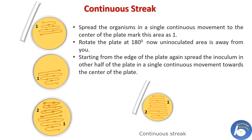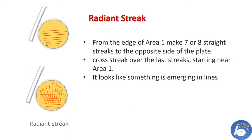Radiant streak plate method: From the edge of area one, make seven or eight straight streaks to the opposite side of the plate. Cross-streak over the last streaks starting near area one. It looks like lines emerging outward, which is why it is known as the radiant streak plate method. After streaking, keep the plate in the incubator and after 24 hours observe the growth.